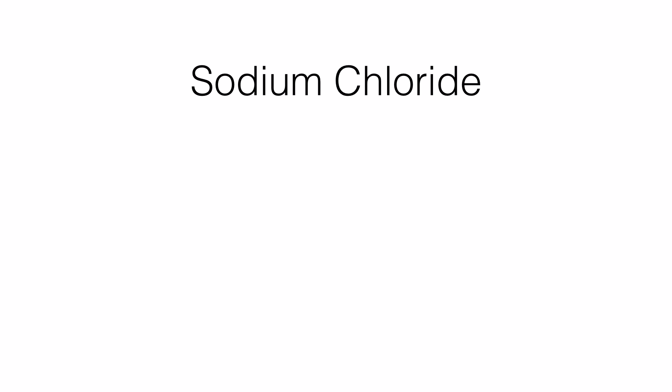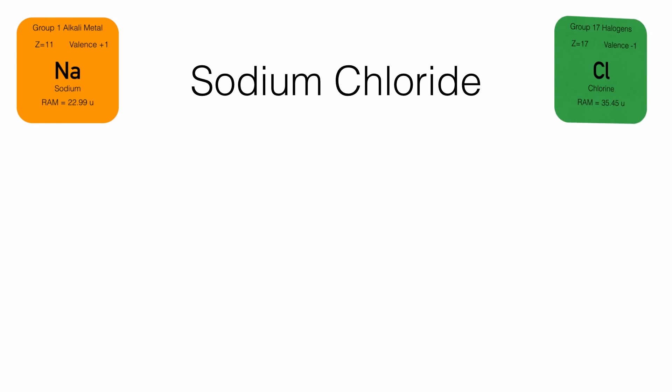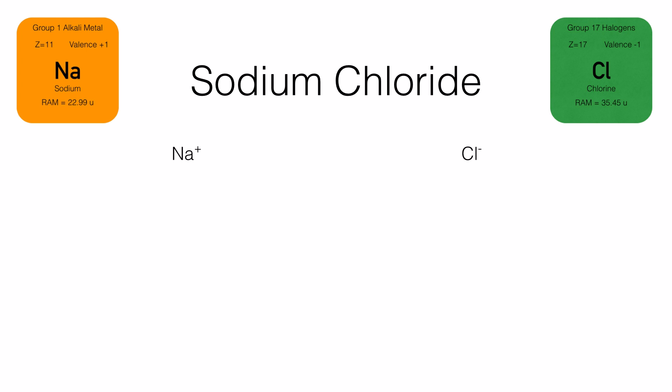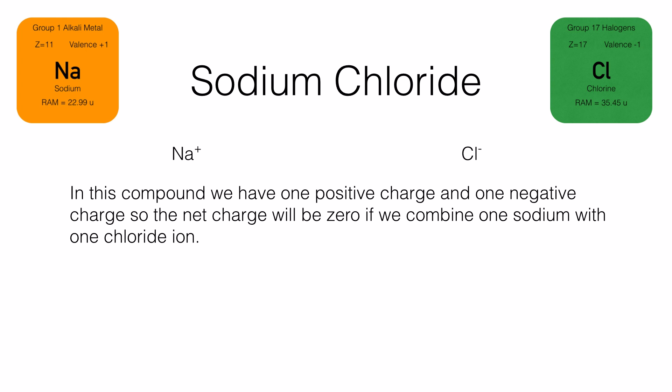Here is an example: sodium chloride. The two elements are sodium and chlorine. Sodium belongs to group 1, therefore its valency is plus 1. Chlorine belongs to group 17 and its valency is minus 1. Since we have one positive and one negative, all we have to do is combine them together. The formula of sodium chloride is NaCl.